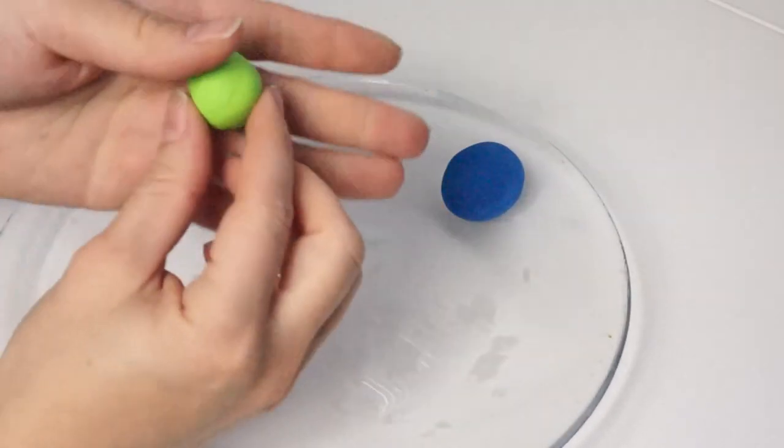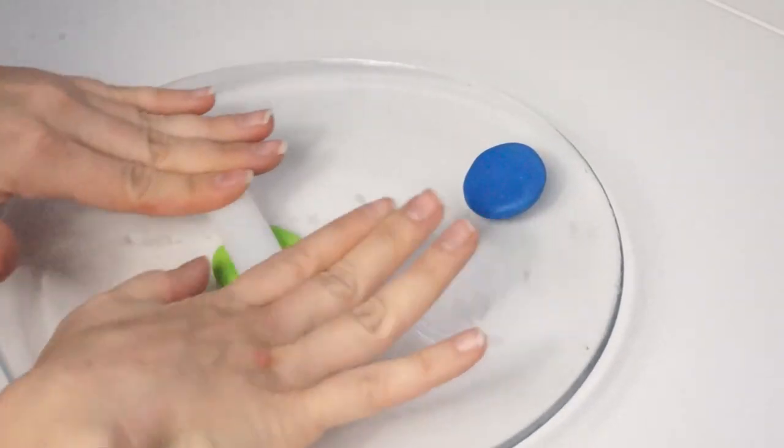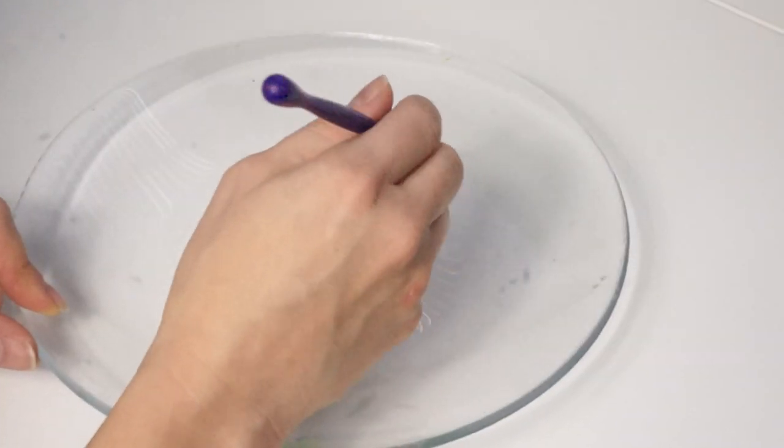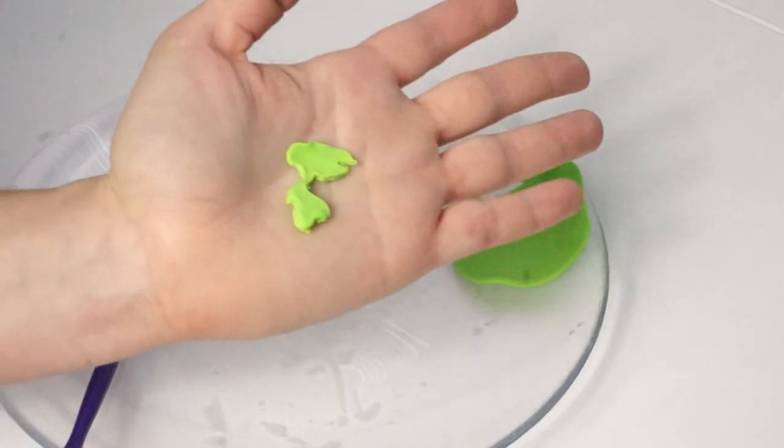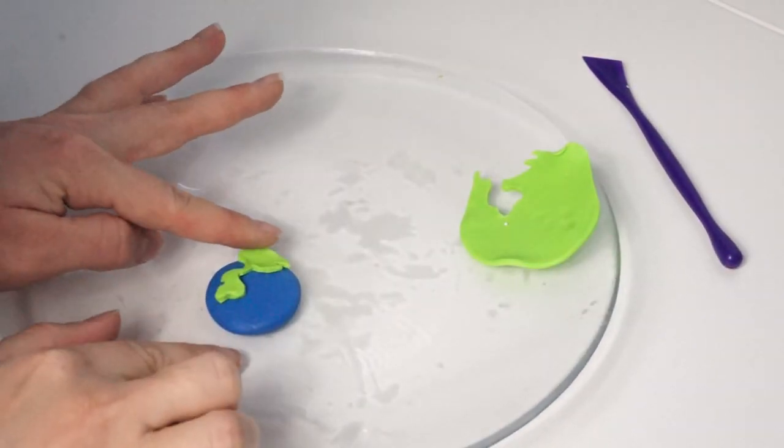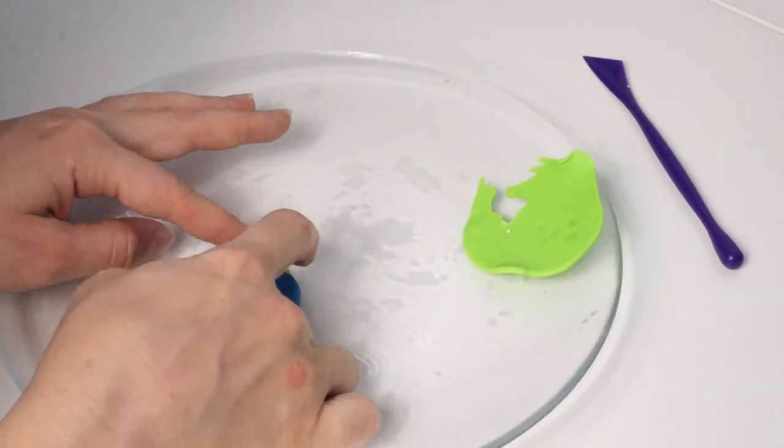Then take your earth green polymer clay. It's time to make the continents. I used a photo of the world to get the actual accurate shapes of the continents. Voila! Place your North and South America in place and move on to the other continents.